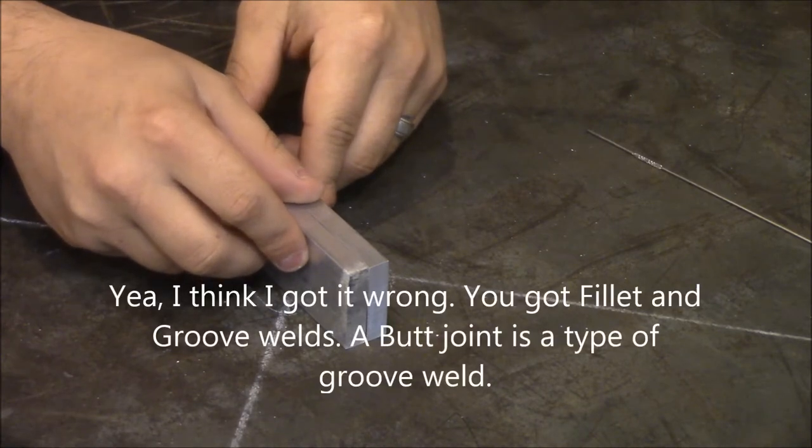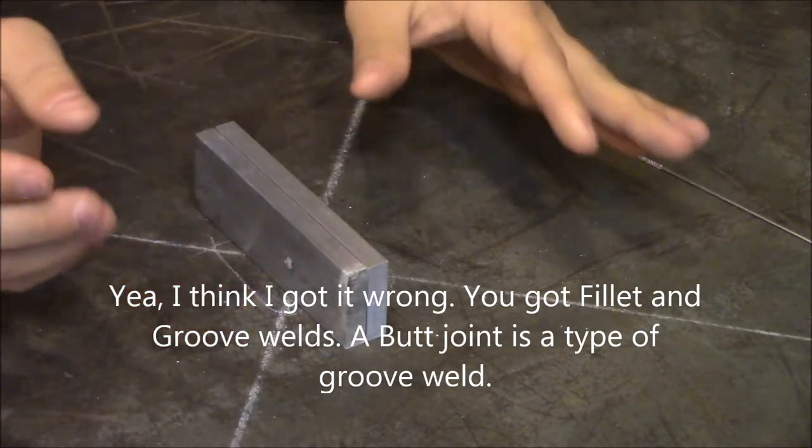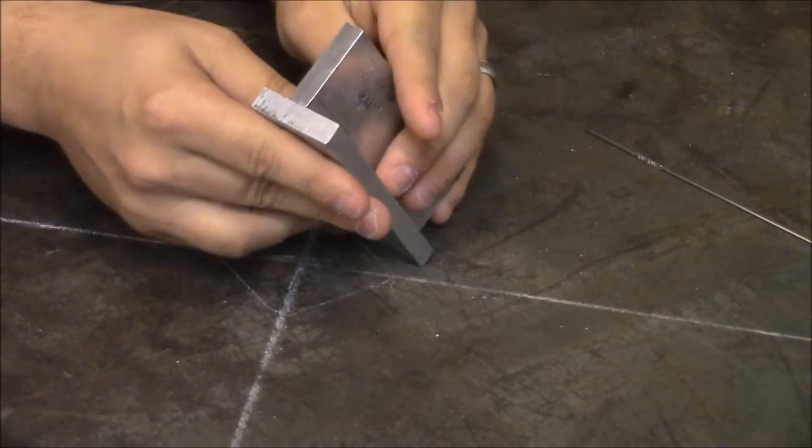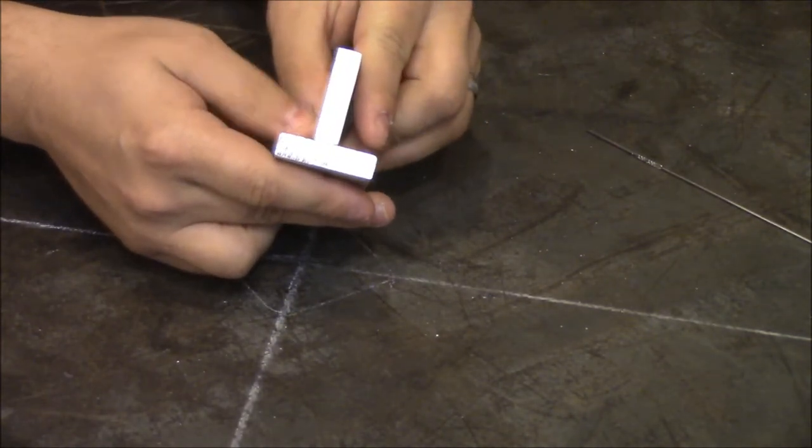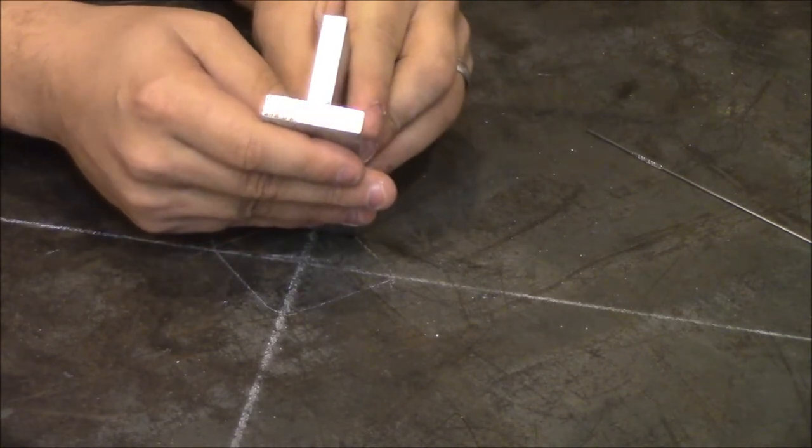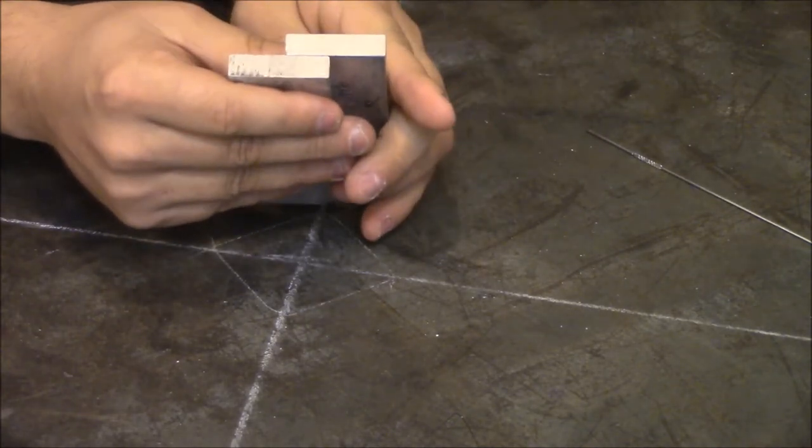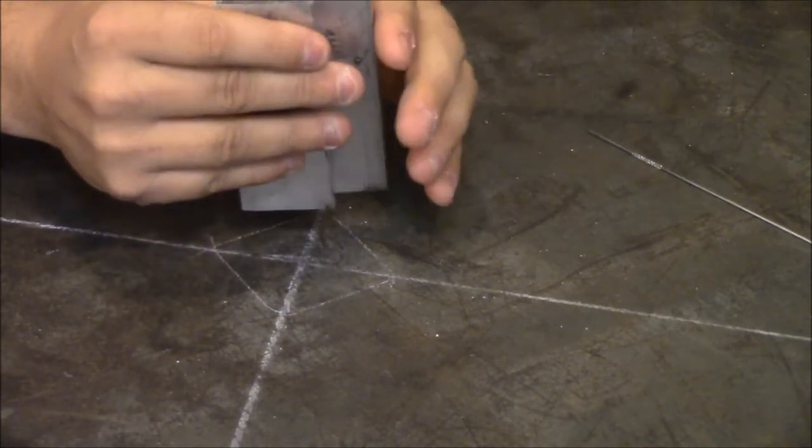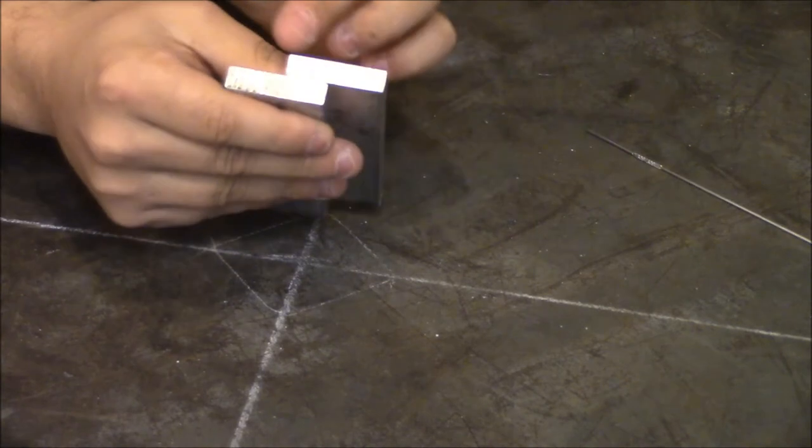Your T joint fillet weld could be, if you had this beveled, a butt weld as well. Then your lap joint is your fillet weld. I can't say I've really seen it, but I imagine you could also bevel one side and have it be a groove weld as well.